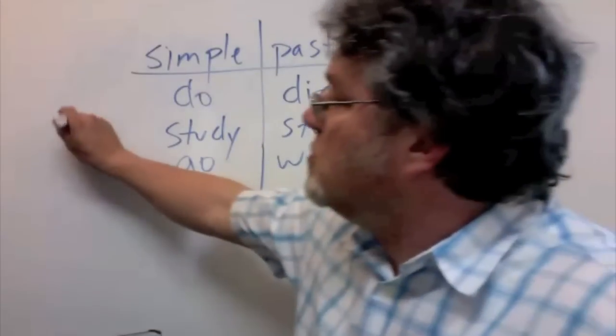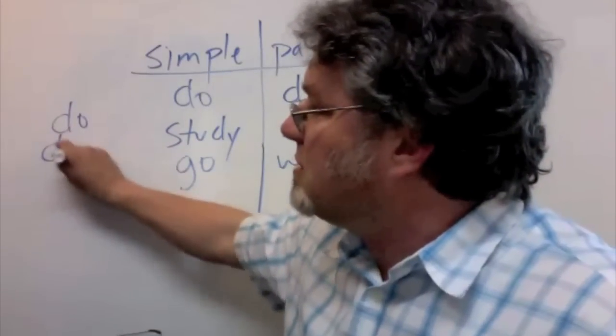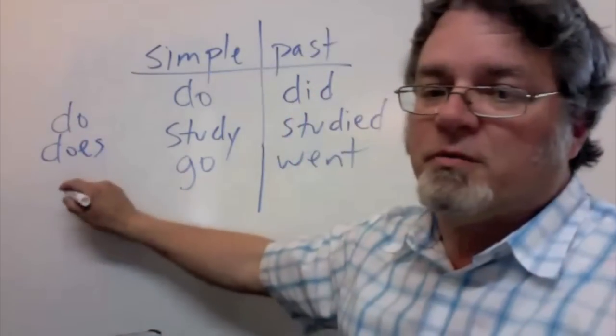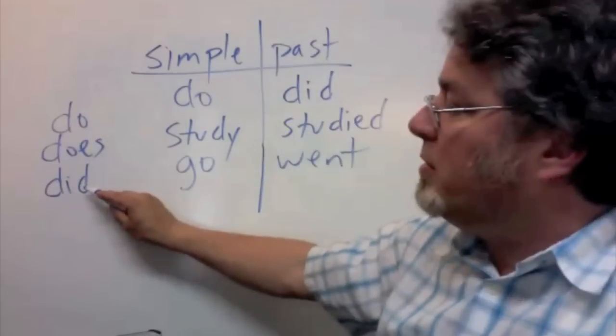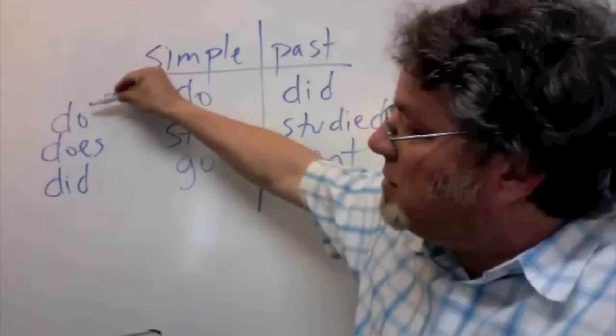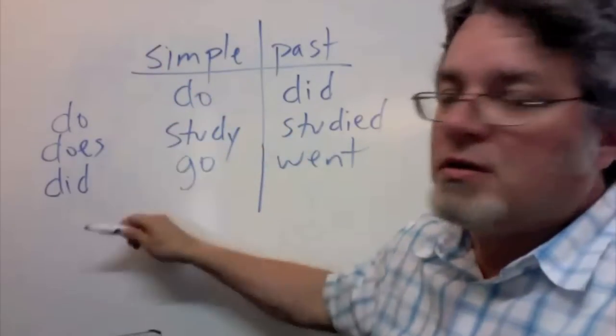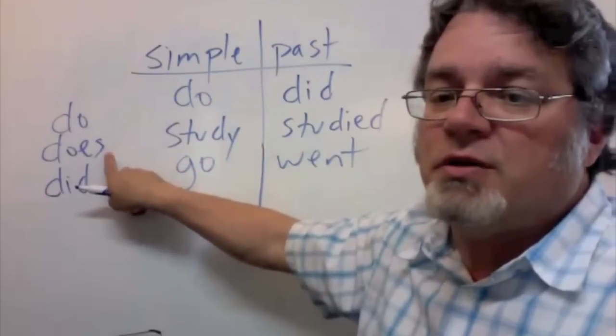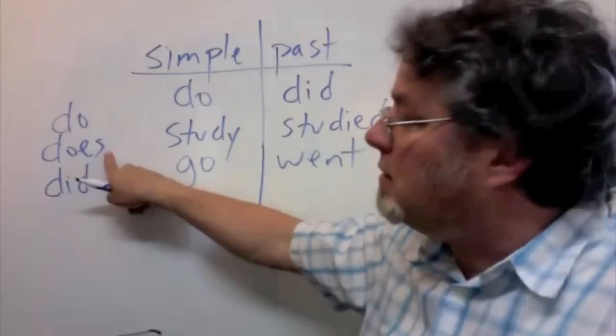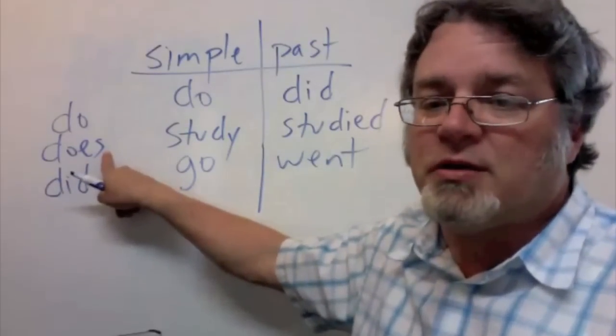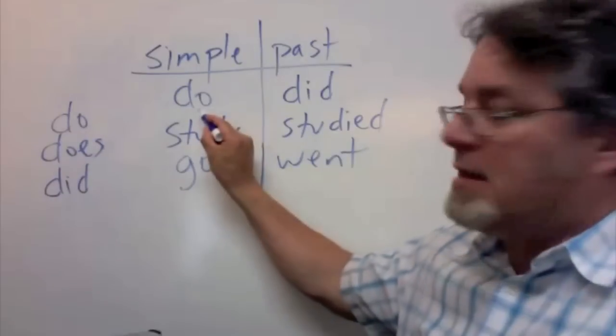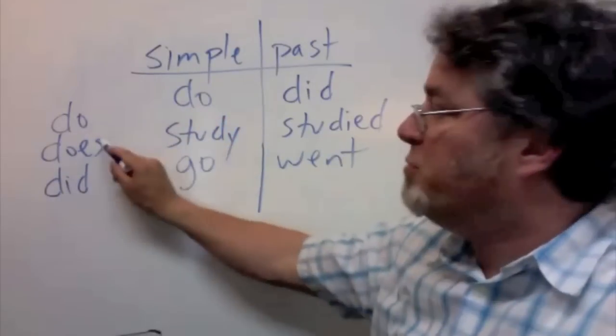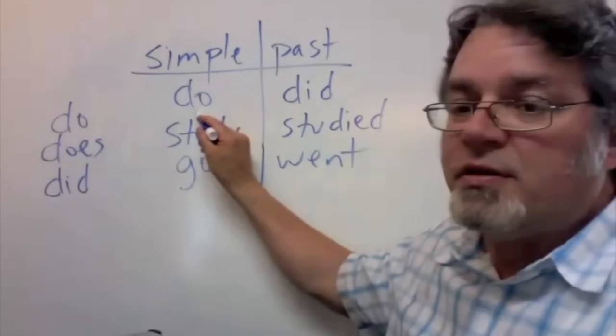The verbs do and does are helping verbs, and the verb did is also a helping verb. These two are used for the present tense. We use does for the third person singular. He does, she does, and it does. Notice that do is a helping verb, and it can be a main verb. So you can put this together with this.